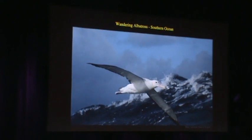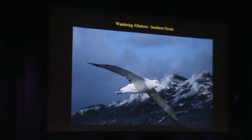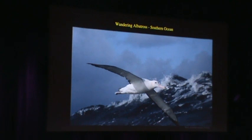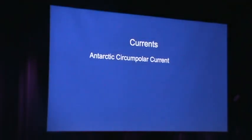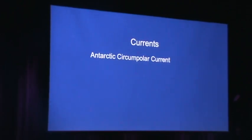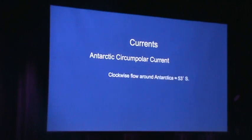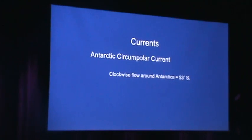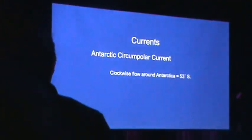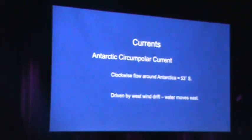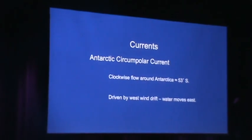As we come across you should be looking out for the various albatrosses. Many of you have already seen black-browed albatross; the wandering albatross is a little more rare and is the largest of the albatrosses you're likely to see here. So let's take a look at the currents. The Antarctic Circumpolar Current flows clockwise around the Antarctic, with its center somewhere around 53 degrees south latitude, driven by the west wind drift.